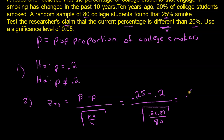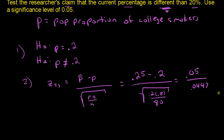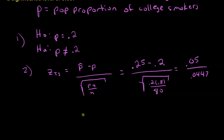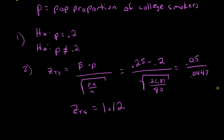This gives us 0.05 divided by 0.447. The test statistic, rounded to two decimal places, is Z = 1.12. Remember, all Z values are rounded to two decimal places.